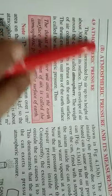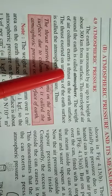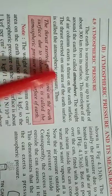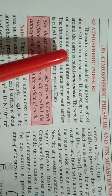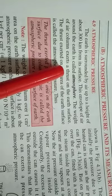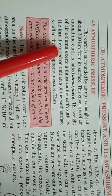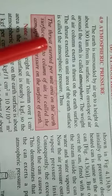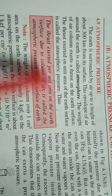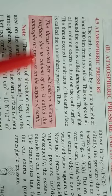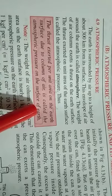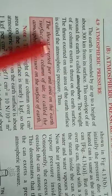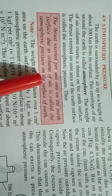So the weight of air column exerts a thrust on the earth's surface. The thrust exerted on unit area of earth's surface is called atmospheric pressure. That is, the thrust exerted per unit area on the earth's surface due to column of air is called the atmospheric pressure.